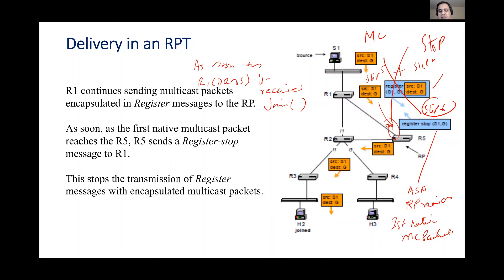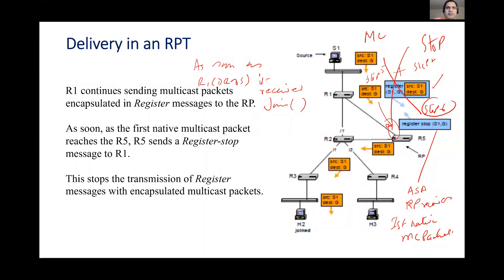To summarize the full process: it started with encapsulated multicast inside a Register. Upon receiving the first Register at the RP, a Join was sent. Upon receiving the Join at the DR of the source, native multicast was added. Upon receiving the first native multicast at the RP, a Register-Stop was sent, ending encapsulation. Now there is pure multicast operation from source to H2 through the Rendezvous Point Tree.